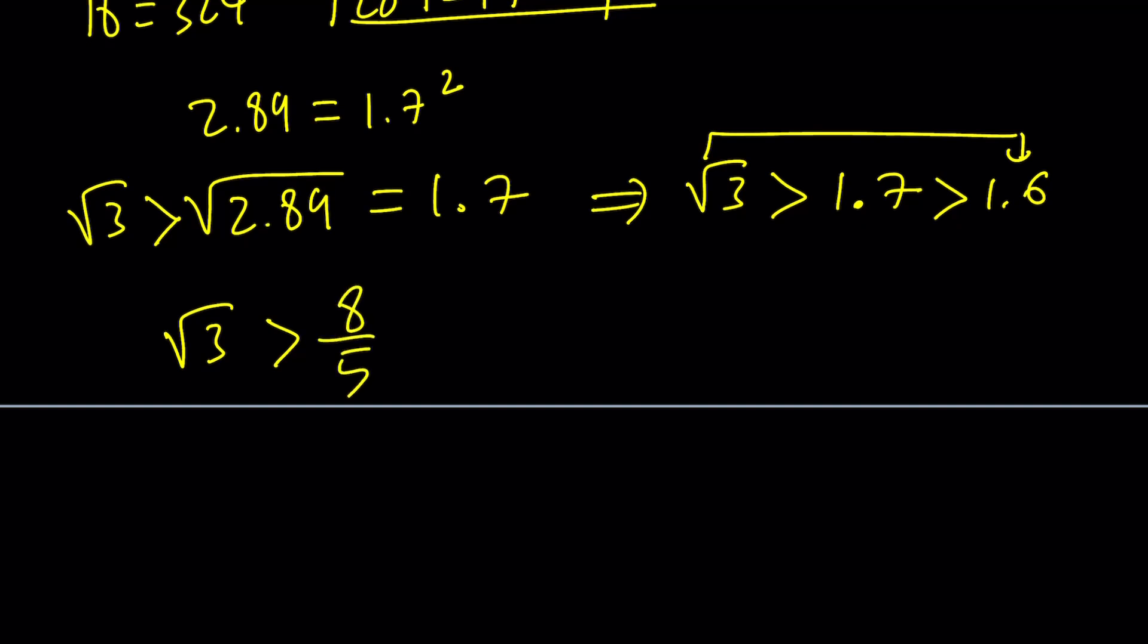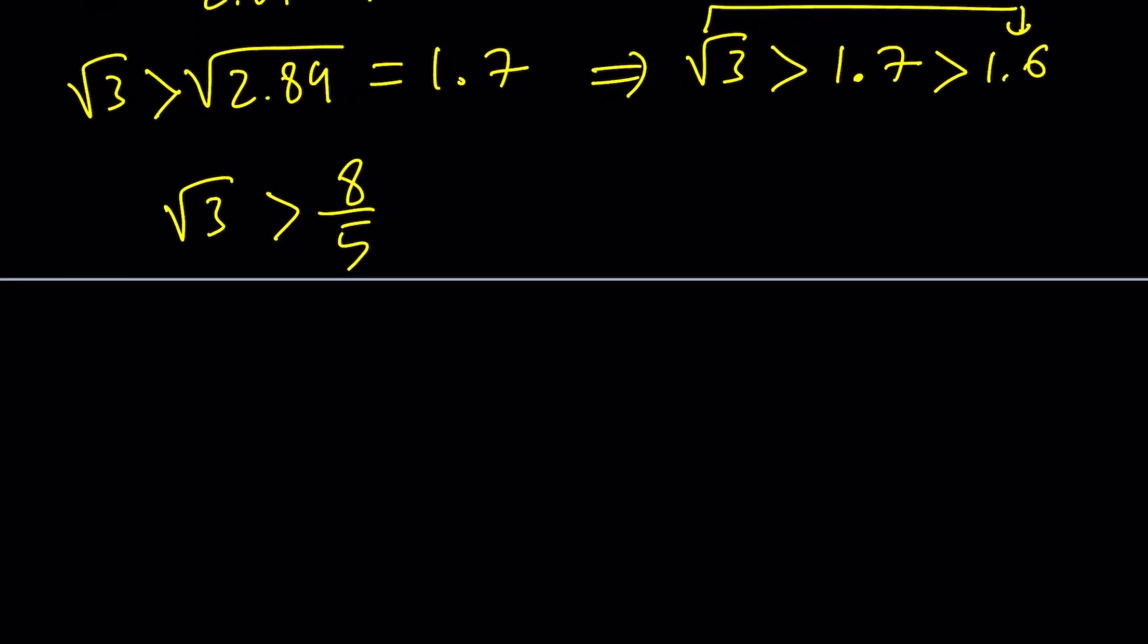Now, there's obviously another way to prove this. Let me also show you that. That's what I meant by alternatives, by the way. Think about it this way. 64 is less than 75, isn't it?